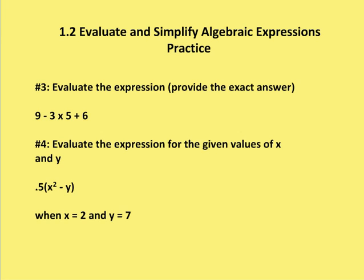So if we take a look at the first expression 9 minus 3 times 5 plus 6, we see that there are no parentheses, there are no exponents, but there are two terms that are multiplied together. I have negative 3 times 5.